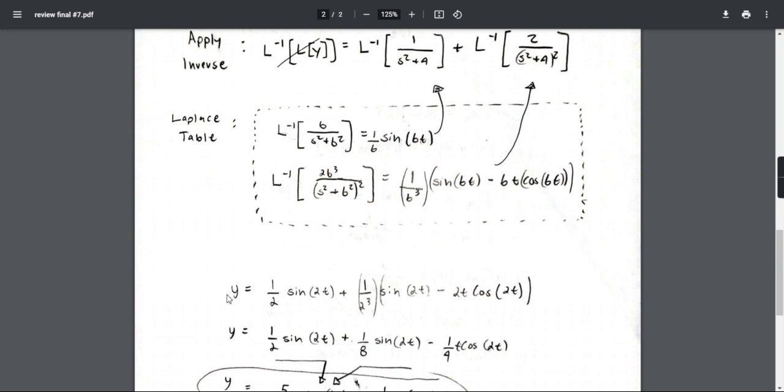So now, first step, this section right here, this is going to be equal to this. It's going to be 1 over 2, 1 over 2, sine 2t, sine 2t. So that is finished right there.